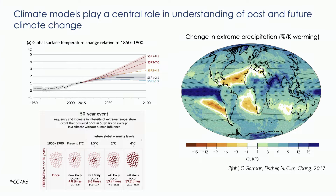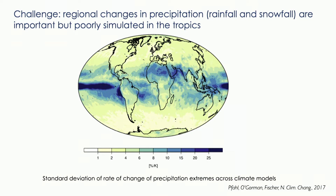This is what a climate model would tell us will happen. Blue means an intensification of extreme precipitation, and you can see that's true over most of the land surfaces. But climate models do have some challenges. The simulation of precipitation — in particular rainfall and snowfall — is not very good, particularly in the tropics. If you look at the tropics, models disagree substantially with one another about how precipitation will change.